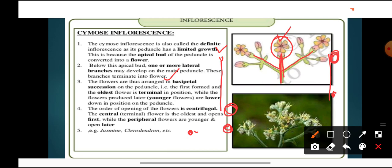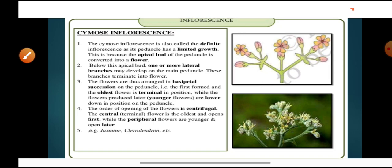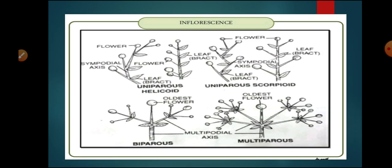In racimose, arrangement was centripetal — younger in center, older at periphery. In cymose, the opposite — centrifugal arrangement — older at center, younger at periphery. So in cymose inflorescence, the main axis terminates into a flower with limited growth, and further growth happens through lateral branches. Cymose inflorescence is of different types: uniparous, biparous, and multiparous. In uniparous, the main axis terminates into a flower and further growth occurs with one lateral branch. In biparous, two lateral branches develop. In multiparous, many lateral branches develop.